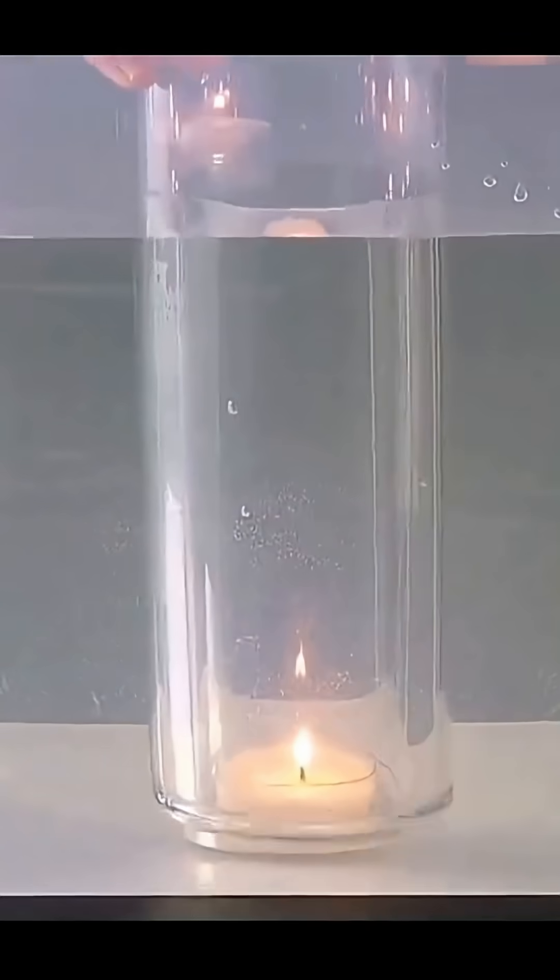Mix expired cornstarch with water. Boom, you've made a non-Newtonian fluid. It's soft if you touch it gently but goes hard under pressure.